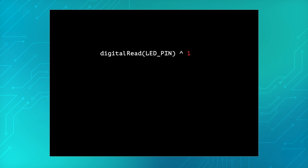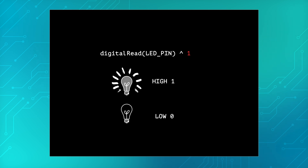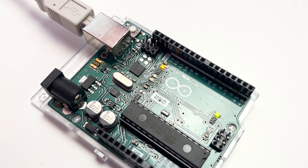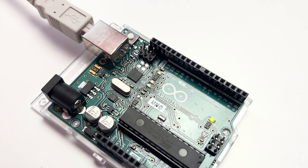digitalRead(LED_pin) will return either HIGH, which is 1, or LOW, which is 0, depending on the current state of the LED pin. The XOR bitwise operator with 1 then toggles that state. If the current state is HIGH, the result of this operation will be 0, which is LOW. And if the current state is LOW, the result will be 1, which is HIGH. So, digitalRead(LED_pin) XOR 1 will return HIGH if the current state is LOW, and vice versa. It's a neat way to toggle the state of a digital pin in just one line of code.